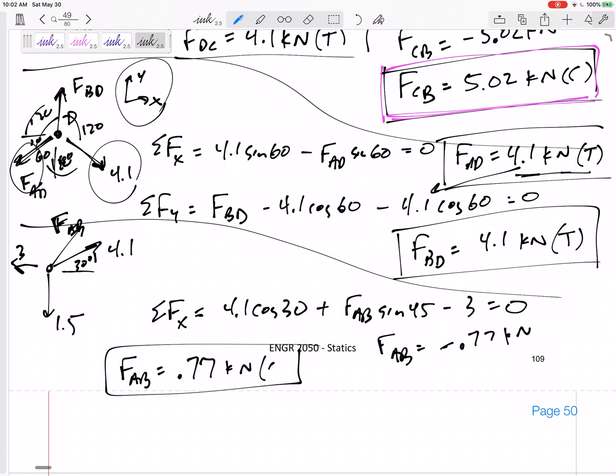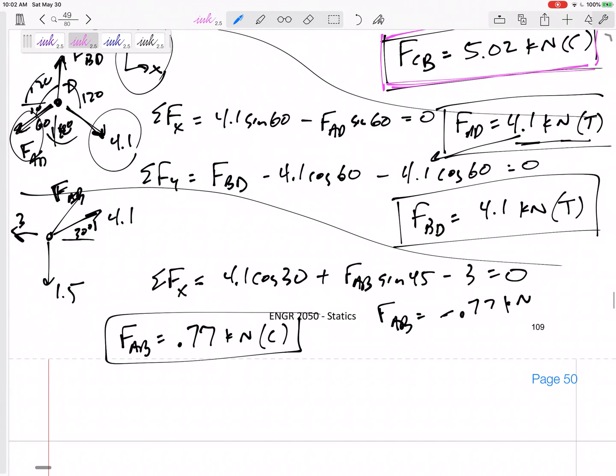You can stop right there. Box in those answers. That's what I'm looking for. But many times you'll have three extra equations. I could stick with this joint and summing the forces in Y equals 0. Then I could hop to joint B which I haven't done yet. And I could sum the forces in X equals 0, sum the forces in Y equals 0 at joint B, just to double check that everything that I've solved for is equal to 0. Alright.